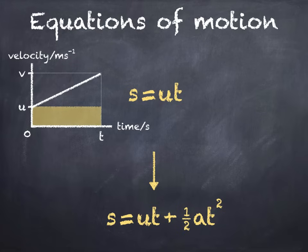The second section is a triangle. Its area is equal to half times the height times the length. The height of the triangle is v minus u, and its length is just t, so its area is half times v minus u times t.